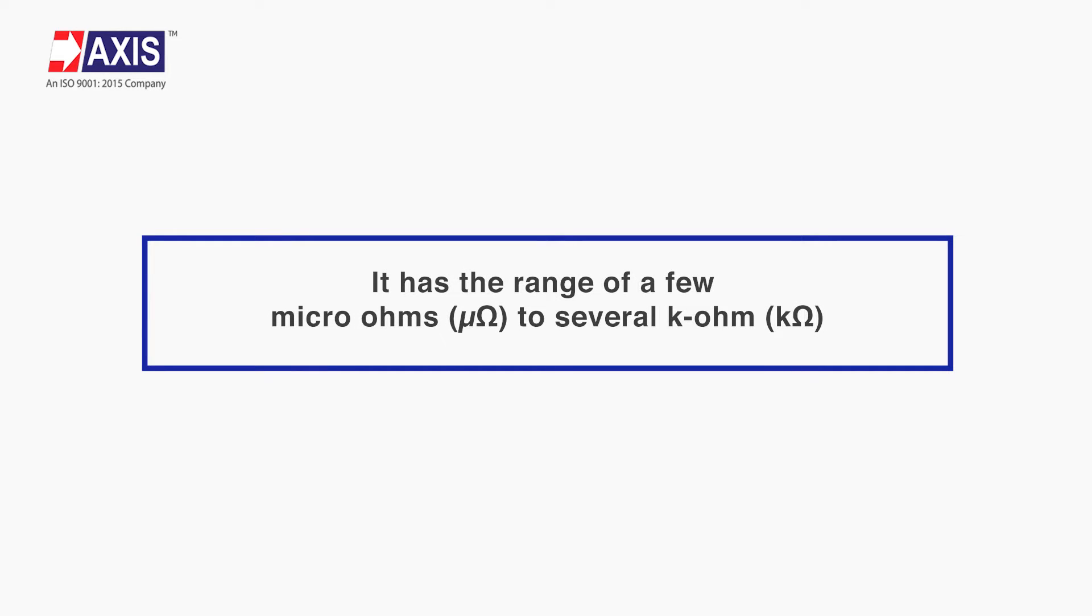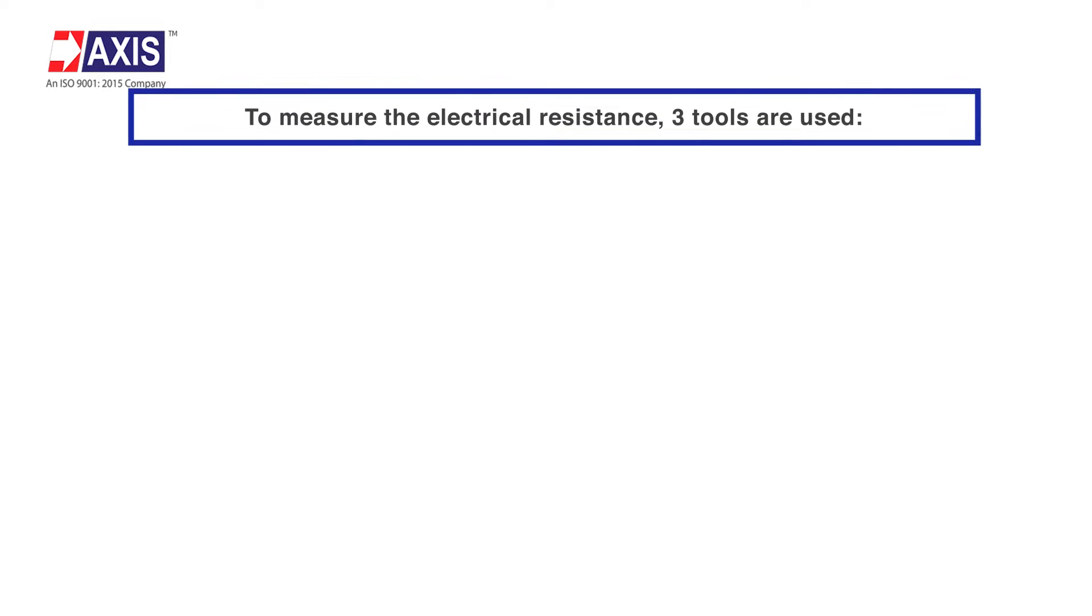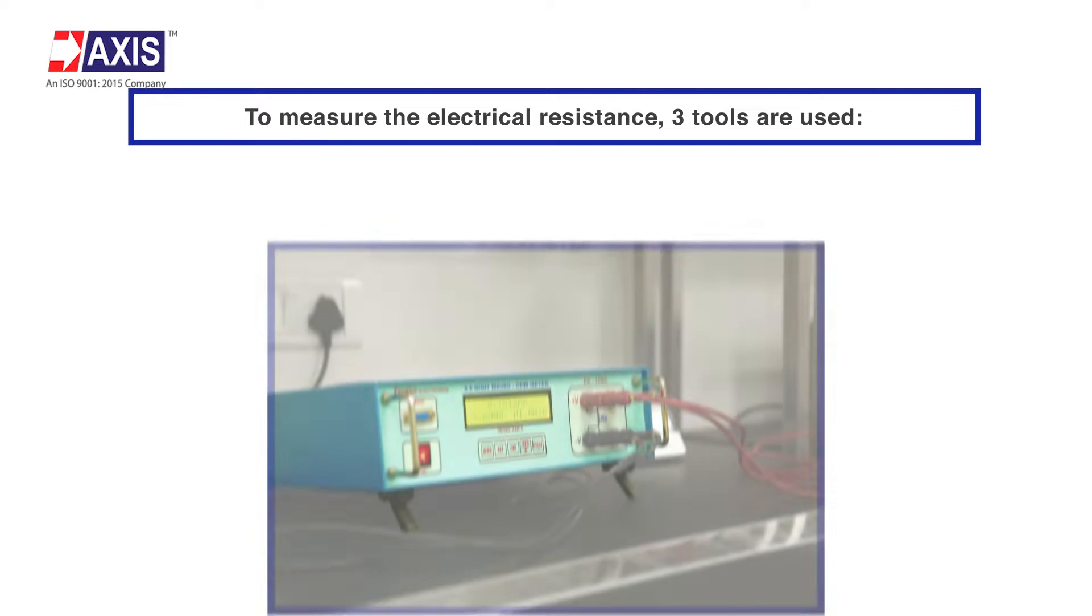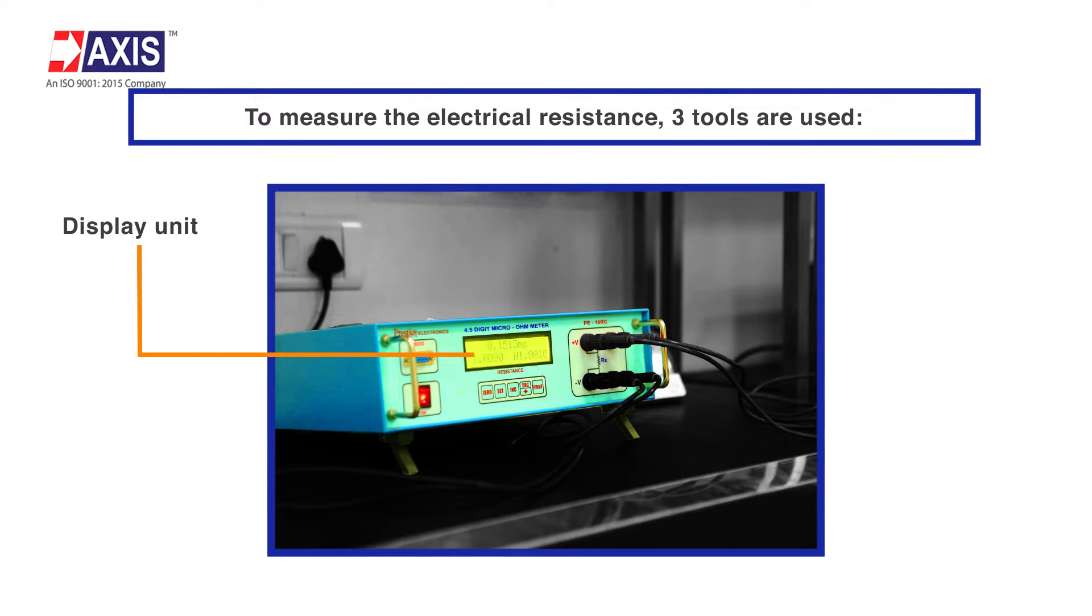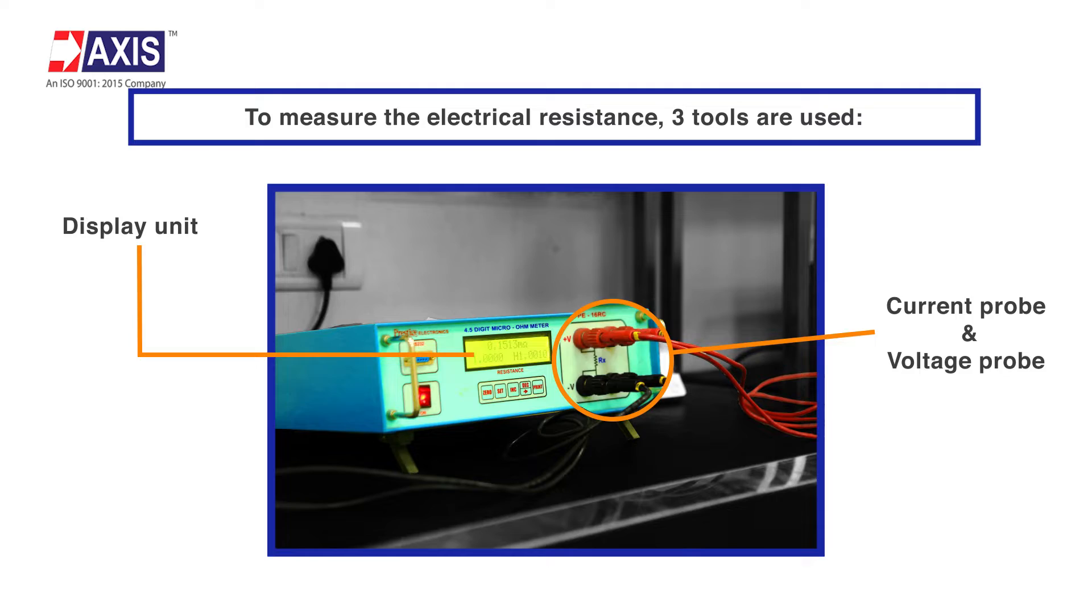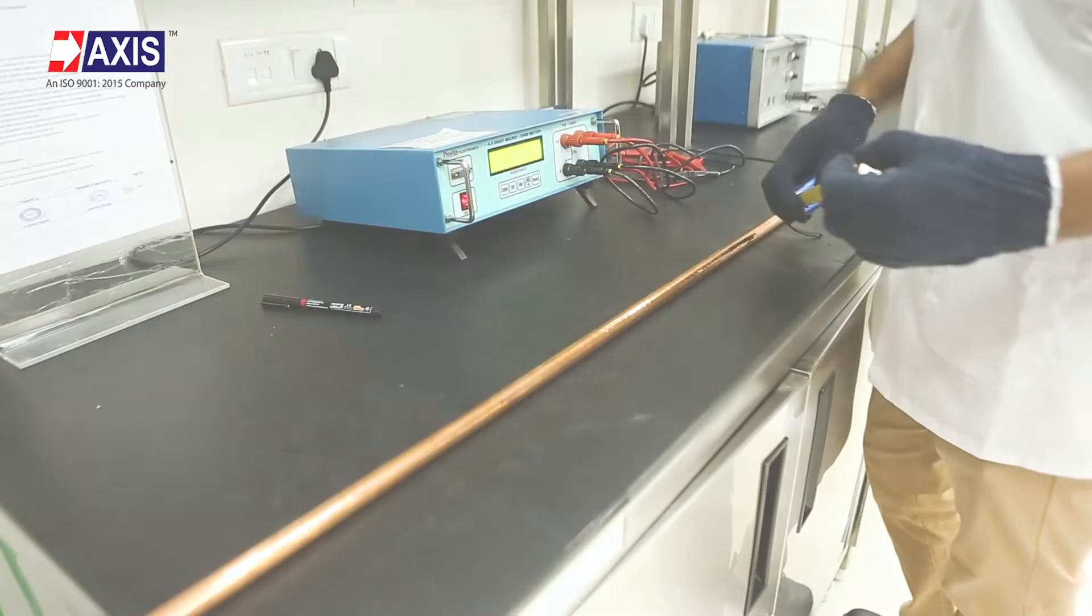To measure the electrical resistance, three tools are used: number one, display unit; number two, current probe; and number three, voltage probe. Steps for testing: